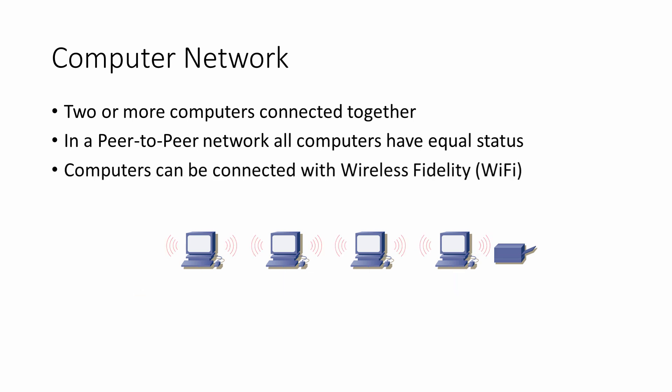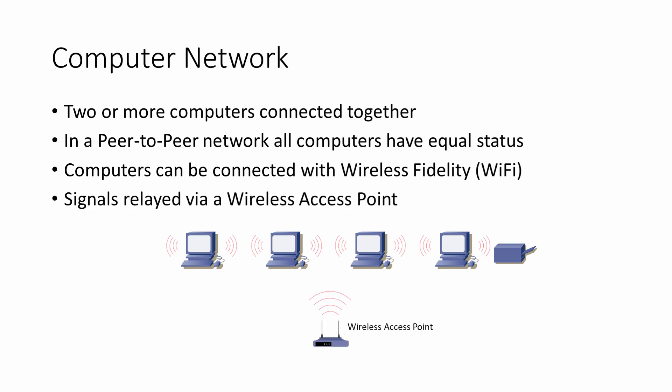Connections between devices on a network can be made using radio signals. This is known as a Wi-Fi network. Wi-Fi stands for wireless fidelity. Wi-Fi networks are particularly useful for laptops, smartphones, and other mobile devices that come and go. Wi-Fi networks rely on a wireless access point through which all traffic must flow. The wireless access point creates an area around it known as a hotspot.